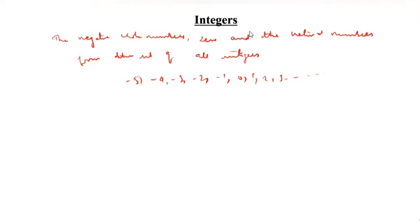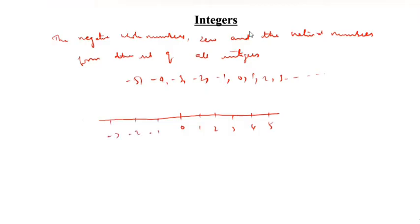I will show this on the number line. So 0 is here. 1, 2, 3, 4, 5. Here is minus 1, minus 2, minus 3, and it continues in both directions.